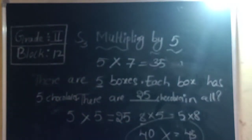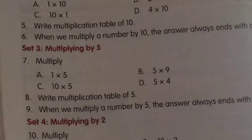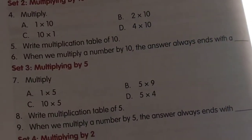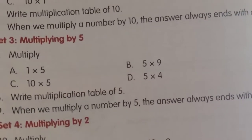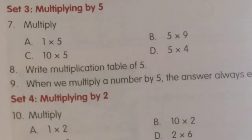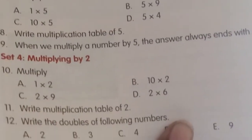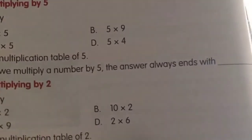Complete your workbook. Along with the workbook, open your textbook to Set 3, page number 89. Multiply numbers by 5 — the answer always ends with 0 or 5. Use skip count of 5 to write. Also write the multiplication table of 5, which is nothing but the 5 times table. Observe your multiplication table and note that when we multiply a number by 5, the answer always ends with 0 or 5.